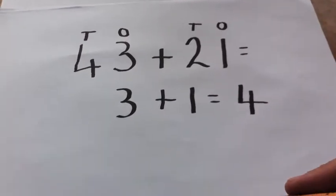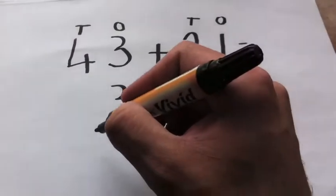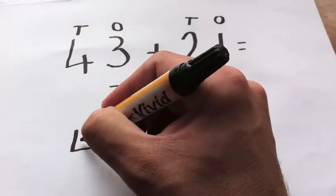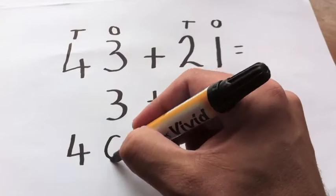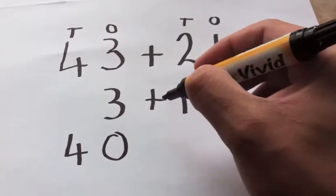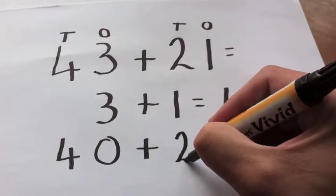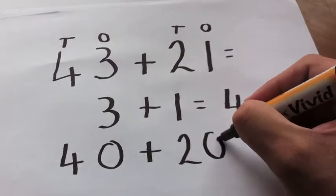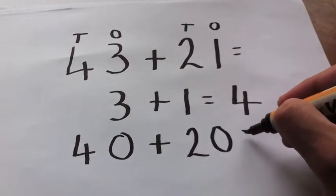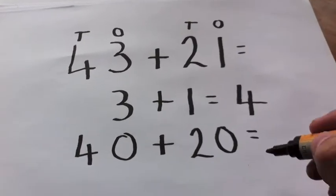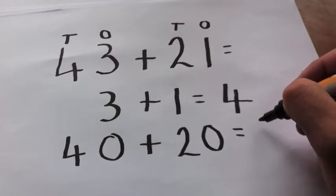And then you're going to do your tens column, now it's not 4, remember, it's 40 plus, not 2, but 20. And then you're going to add those together also, so 60.